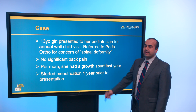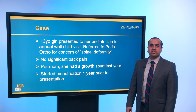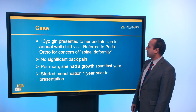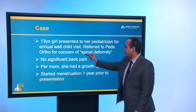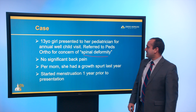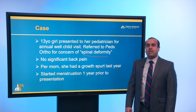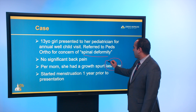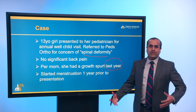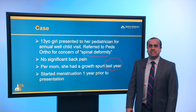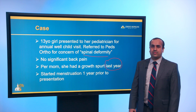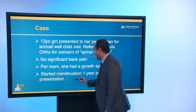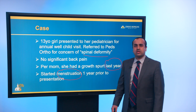We have a case of a 13-year-old girl who presented to her pediatrician for an annual well-child visit. She was referred to pediatric orthopedics for concern of spinal deformity. There was no significant back pain. She had a growth spurt last year — it's important to know when the growth spurt happened when evaluating a patient with scoliosis. She started her menses about a year prior to presentation, which gives you a sense of how much growth is remaining.